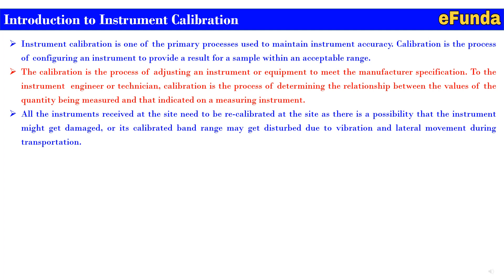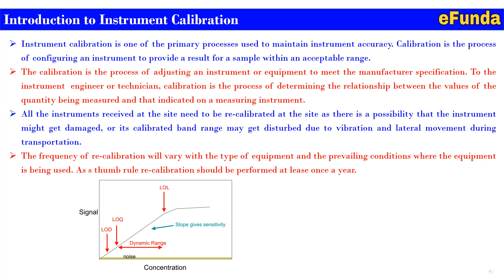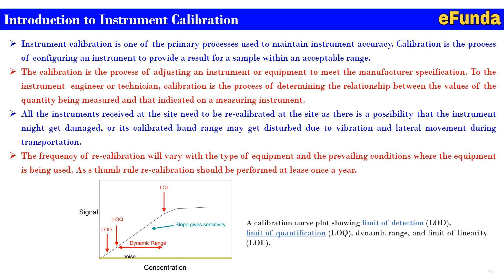The frequency of recalibration will vary with the type of equipment and the prevailing conditions where it is used. As a thumb rule, recalibration should be performed at least once a year, and may vary based on the application and client requirements. One can see the relationship where signal and concentration are plotted on a graph, showing LOD (limit of detection), LOQ (limit of quantification), dynamic range, noise, slope (sensitivity), and LOL (limit of linearity) — forming the calibration curve.